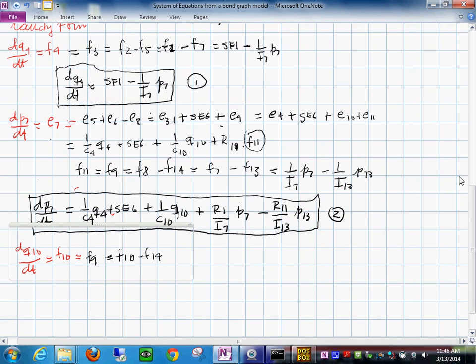So I would venture to put this in here as 1 over i sub 7 p sub 7 minus 1 over i 13 p 13.